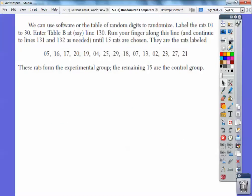Back of the book with table B, we use table B quite a bit. And so we can label the rats from 1 to 30. Now since 30 is a two-digit number, then 1 should be a two-digit number, 01. And enter the table B, say at line 130, run your finger across this line and continue to line 131 and 132 as needed until 15 rats are chosen.